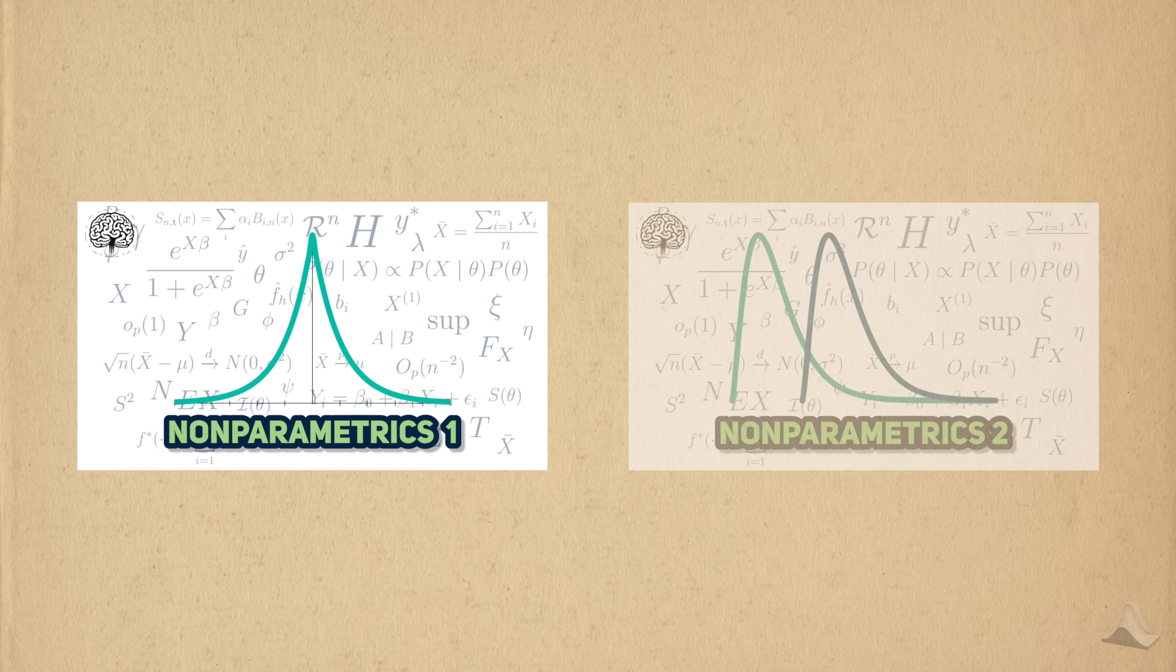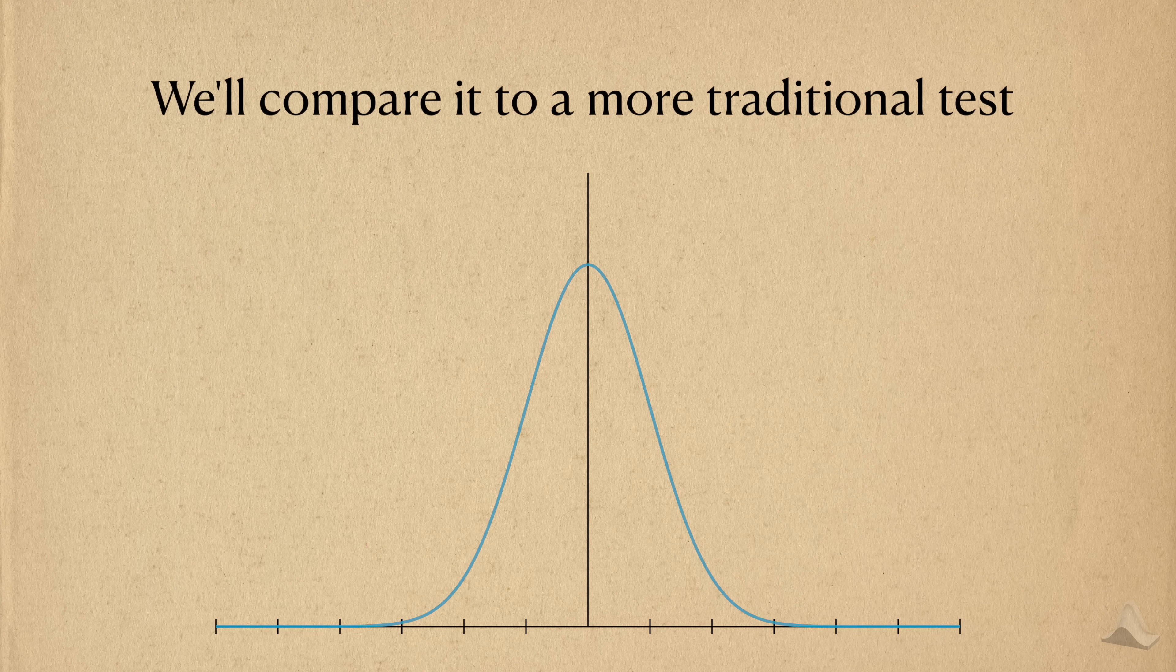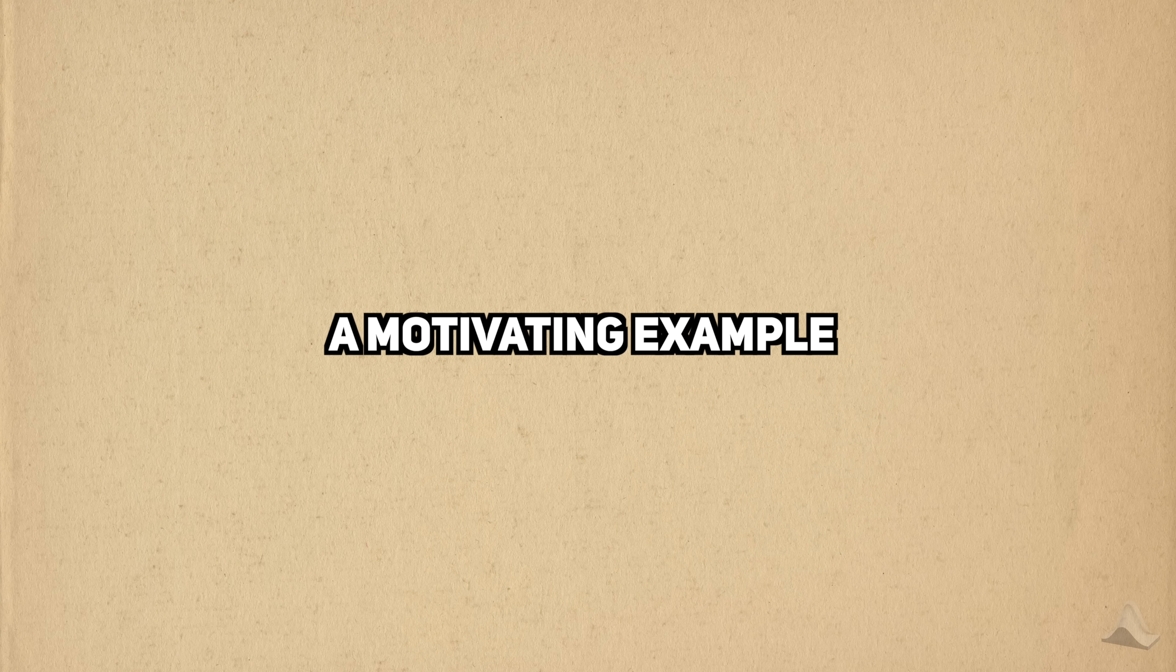In this first part of a two-part miniseries, we're going to look at our first example of a non-parametric hypothesis test. We're going to focus on how this non-parametric test avoids assumptions that a more traditional test might take. Before we look at the test, let me go through a motivating example.